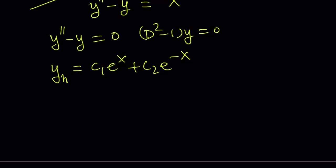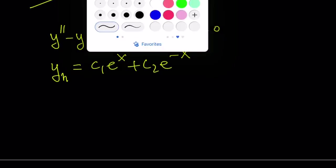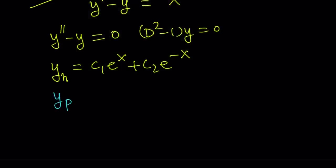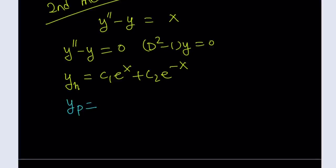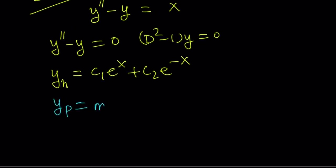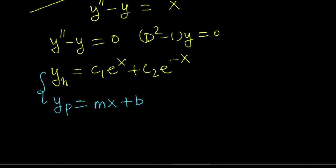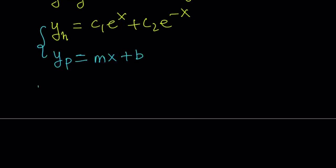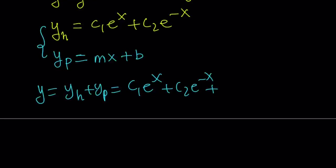Since this equation is not homogeneous — we have an x on the right hand side — we need a particular solution. Since we have an x on the right hand side, I'll assume the particular solution is a linear function: yp equals mx plus b. Adding the particular solution to the homogeneous solution gives the general solution: y equals c1 e to the x plus c2 e to the negative x plus mx plus b.